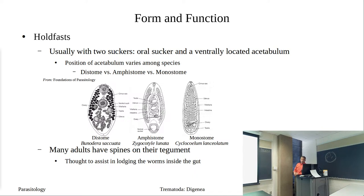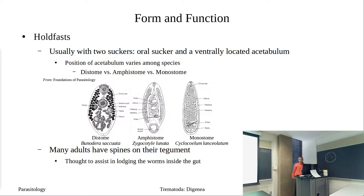The adult worms often have spines on their tegument. It's thought that these spines aid the worm in remaining positioned in the intestine — if you have backward-facing spines and position yourself against the flow, those spines help resist movement down the gut. Some spines are large, some are really tiny. We do have a worm where you can zoom in at 40x on the edge of the tegument to see some of these spines.